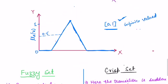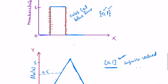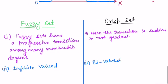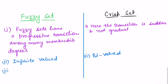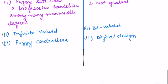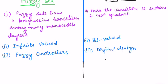Bivalued logic is used in digital design — switch off and switch on. When we have fuzzy controllers, we use infinite-valued logic. So fuzzy sets are used in fuzzy controllers, while crisp sets are used wherever bivalued logic applies, such as digital design. Additionally, fuzzy sets show gradual membership degrees, while crisp sets show total membership degrees.